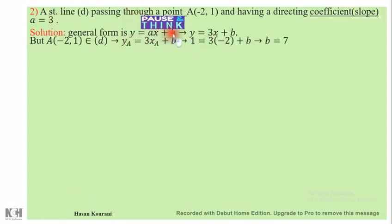We need the value of b, and we must find the values—we must have the values of y and x. As you know, y and x represent the coordinates of a point on the straight line.